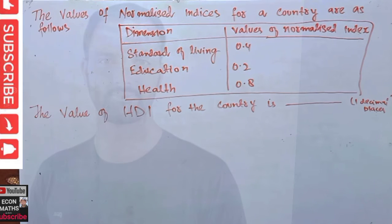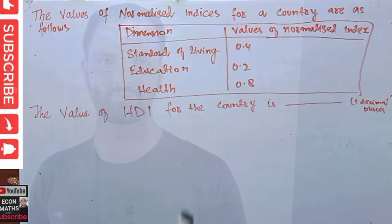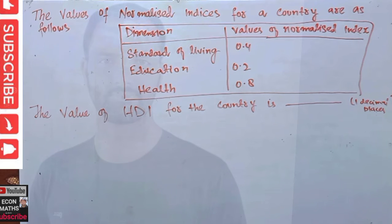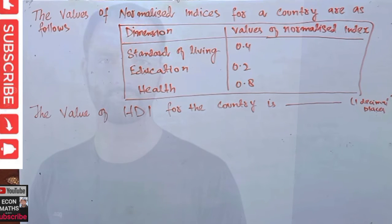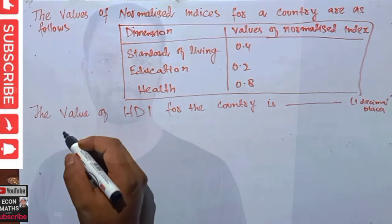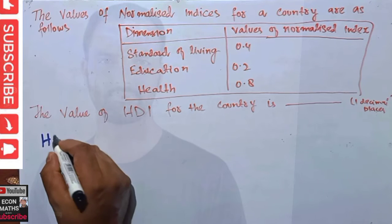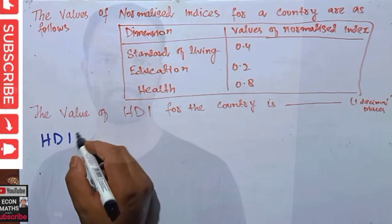We have to find the value of the Human Development Index. The HDI is used as an indicator for the development of a country. The higher the value of this index, the more developed the country is. So how do we calculate HDI?